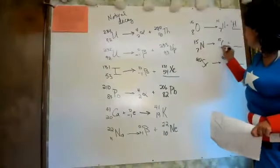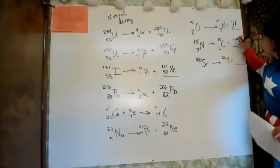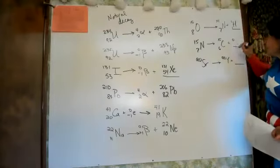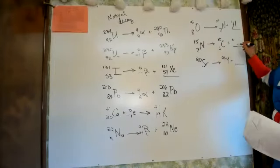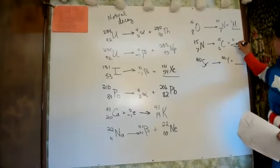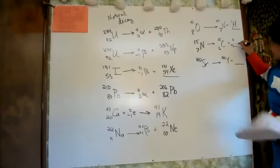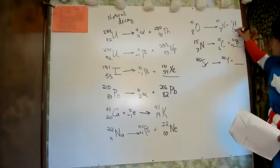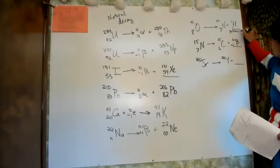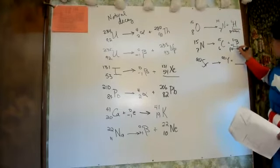The next one: atomic number is 7 on one side, 6 on the other. The mass did not change, but the lower number is now plus one — so this is a positron. The first one was a proton; this one is a positron.